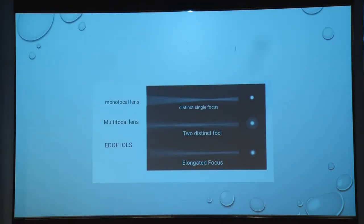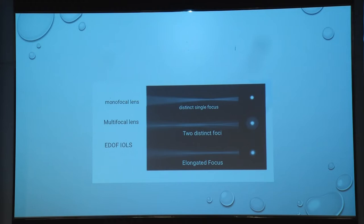Coming to the physics: monofocal lenses focus rays from distance at a single point, giving a distinct single focus and thereby less halos and less glare. In multifocal lenses we have two distinct foci, so light intensity gets distributed and we get glare, halos, and other problems. In extended depth of focus lenses we have an elongated focus — compared to monofocal there is a little glare, but relatively less than multifocal lenses.